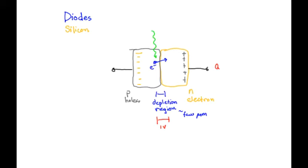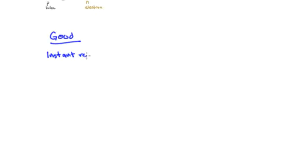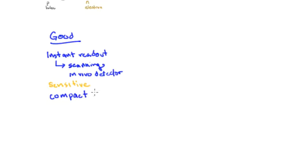There are some clear advantages and disadvantages to diodes. On the good side, they give an instant readout of the dose, so you can scan across a beam or do in vivo readings as a detector on a patient and get an instant readout on a surface. They're very sensitive—they can measure small doses accurately.